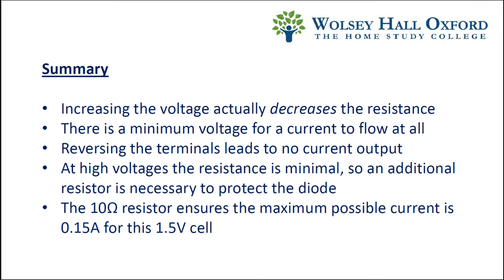We also found that because it's a diode, reversing the terminals leads to no current output. At high voltages, the resistance is minimal. So an additional resistor is necessary to protect the diode. In this example, the 10 ohm resistor ensures that the maximum possible current is 0.15 amps for this 1.5 volt cell.